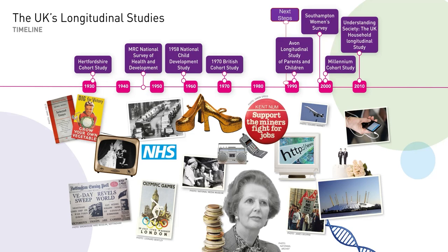The UK has a long history of world-leading longitudinal research. Some of the world's longest running longitudinal studies are hosted here in the UK, and these studies have been driving research and influencing policy across many fields for generations. These longitudinal studies allow us to track changes over time both within individuals and across different generations, and this can help us identify normal developmental trajectories and how development is shaped by risk factors that can be either fixed or time-varying. Given that longitudinal studies typically measure a wide range of variables from different domains, we can control for many extraneous variables and in some circumstances make causal inferences about relationships between variables.